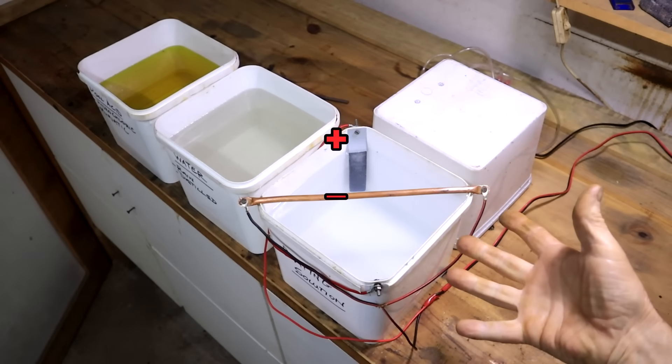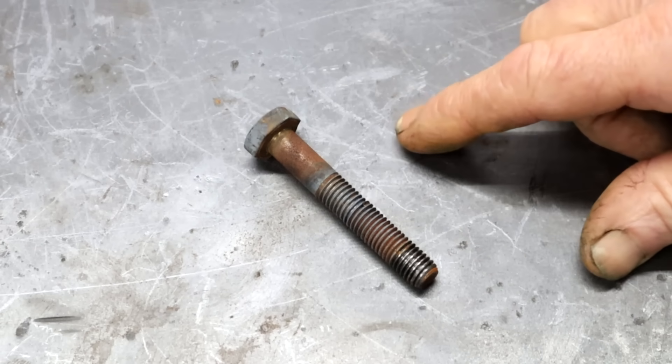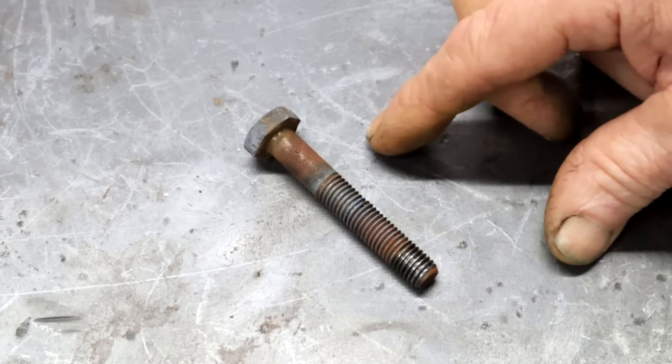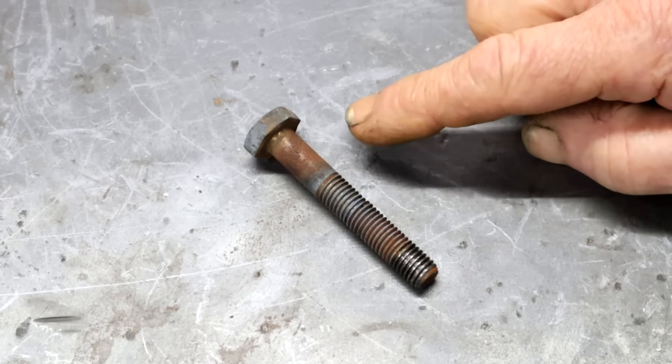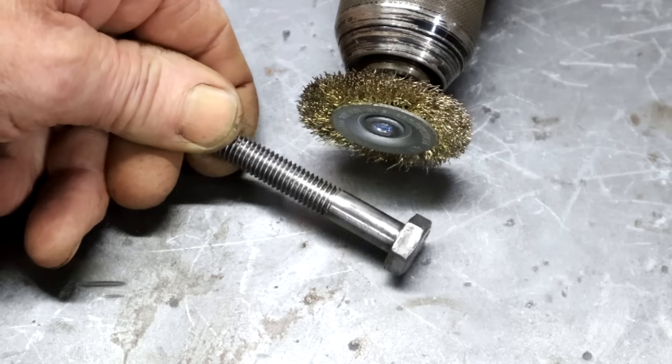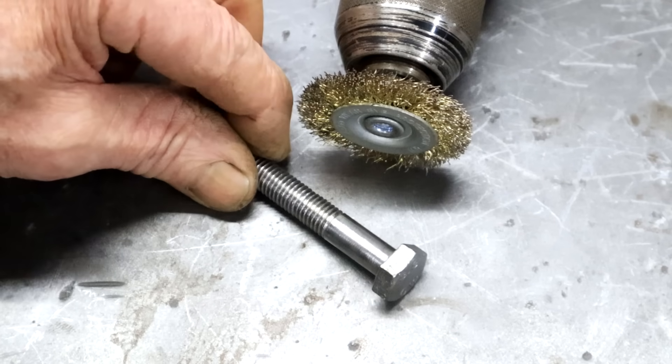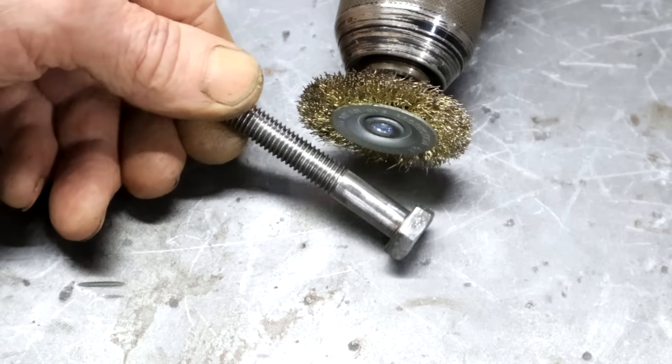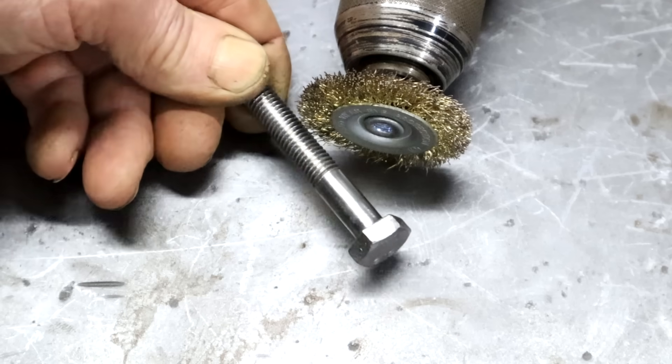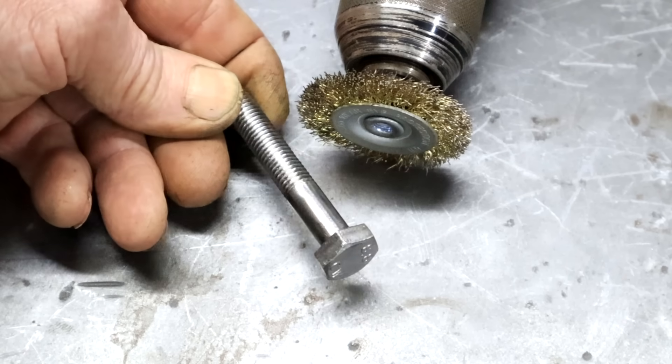We are ready for action. Let's go find a part that we want to plate. Let's do this rusty bolt as a test. Now you can't stick it in just like that. It needs to be perfectly clean. And all the rust must be removed. Like so. Wire brush in a drill. Sandblast, gritblast, media blast. Whatever it takes. But you need to have it nice and shiny and clean like this. If there's any rust spot on it, the plating won't stick to it.